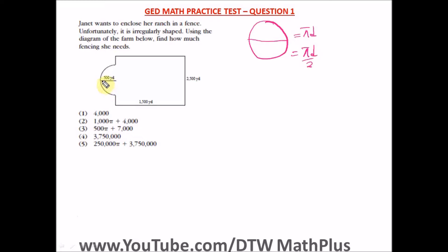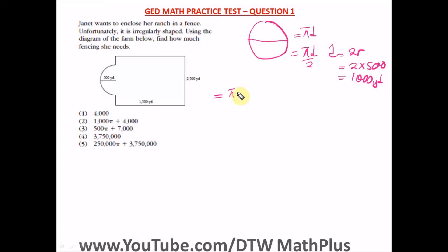The formula for the circumference of a circle is π·d, and for a semicircle it's π·d divided by 2. The diameter d equals 2 times the radius, so d = 2 × 500 = 1000 yards. Now let's add up all the sides. The semicircle perimeter is π × 1000 ÷ 2. The diameter side across the bottom of the semicircle is 1000 yards.